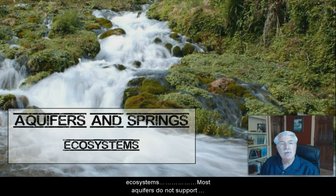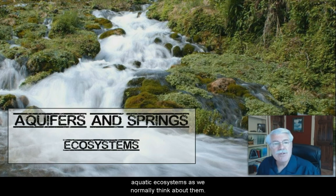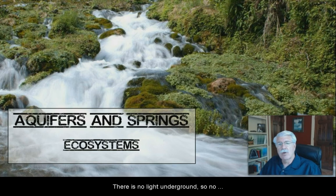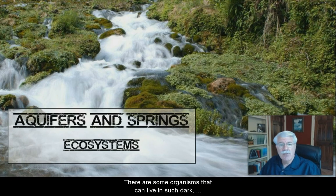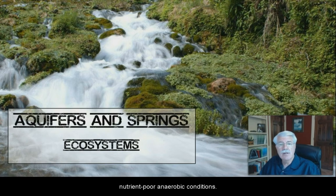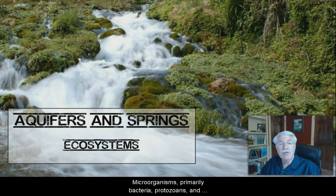Next, let's talk about aquifer and spring ecosystems. Most aquifers don't support aquatic ecosystems as we normally think about them. There's no light underground, so no photosynthesis by plants can occur. There may be no dissolved oxygen. Now, there are some organisms that can live in such dark, nutrient-poor, anaerobic conditions. Microorganisms, primarily bacteria, protozoans, and other unicellular life are found in aquifers.